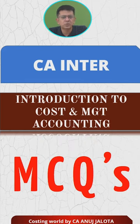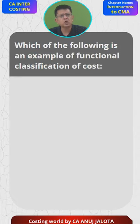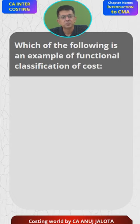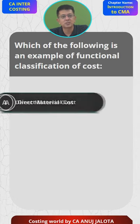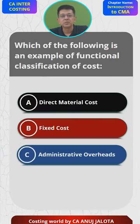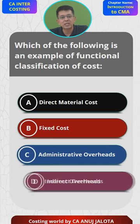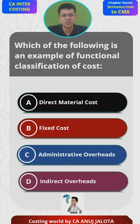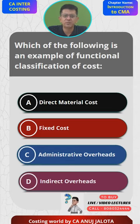So let's do it. Which of the following is an example of functional classification of cost? Obviously for this you should know what is meant by functional classification. The four options are: A - direct material cost, B - fixed cost, C - administrative cost, and D - indirect overheads. Think of the answer; if you have done the theory of this subject you should be able to answer - it should not be very difficult.